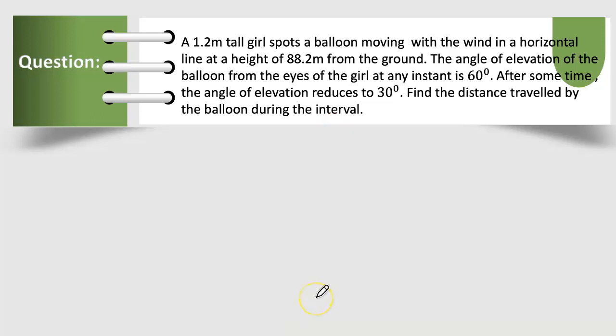Let us figure out this situation. A 1.2m tall girl spots a balloon moving with wind in a horizontal line at a height of 88.2m.